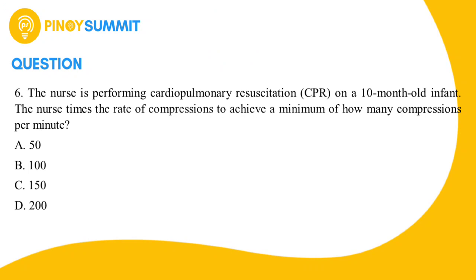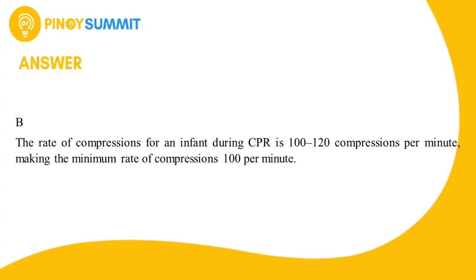To make it easier to find the correct answer, let us remove the two incorrect options, leaving only options B and D. If your answer is letter B, then you are correct. The rate of compressions for an infant during CPR is 100 to 120 compressions per minute, making the minimum rate 100 per minute.